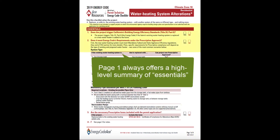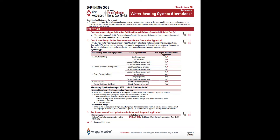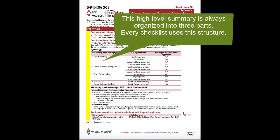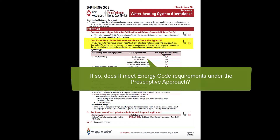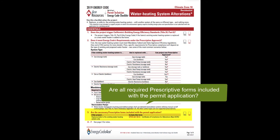Page one of the checklist will always focus on a high-level summary of the essentials. The essentials page is always organized into three parts, which will help you answer three critical questions quickly. First, does the scope of the permit application trigger the energy code? Second, if so, does it meet energy code requirements under the simplest compliance pathway — the prescriptive approach? Third, is the project submitting the correct energy compliance forms?